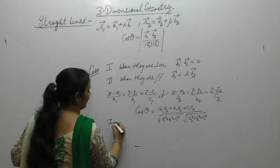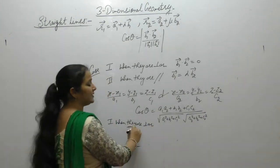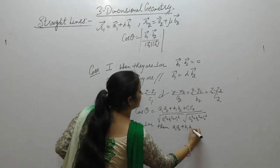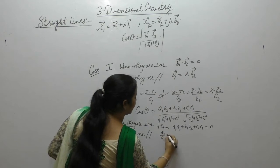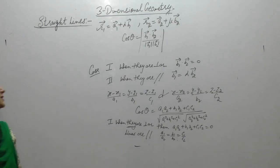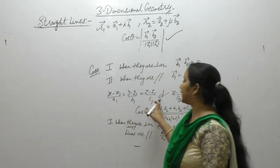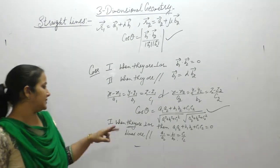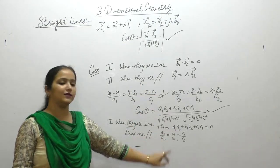There are two cases. First, when the lines are perpendicular: a1·a2 + b1·b2 + c1·c2 = 0. Second, when the lines are parallel: a1/a2 = b1/b2 = c1/c2.